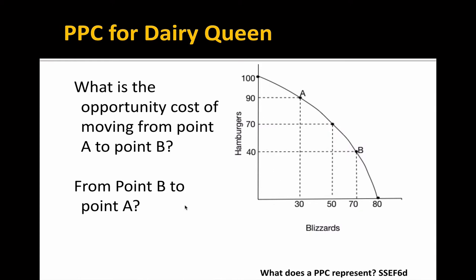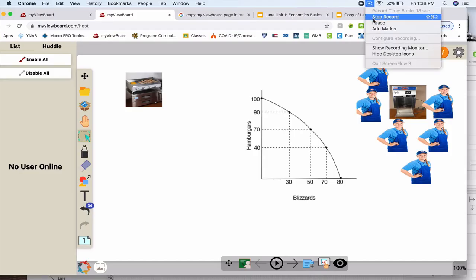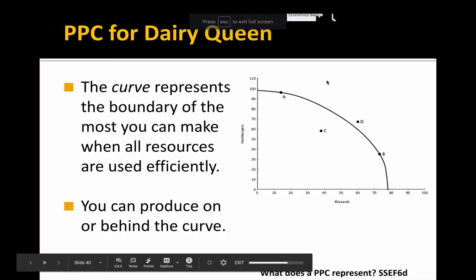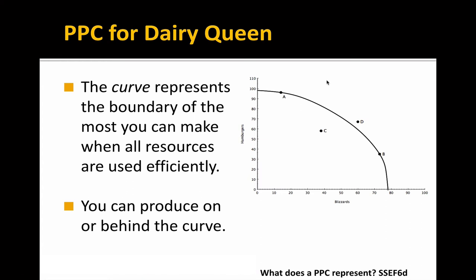Try that with the questions on your own sheet. Coming back to PPCs, the curve here represents the boundary of the most you can make if you use all your resources efficiently. This is the boundary — this is the best you can do.